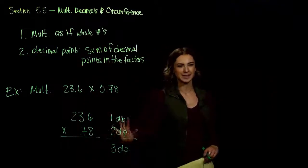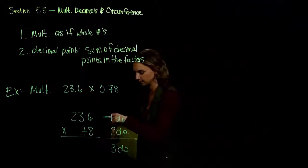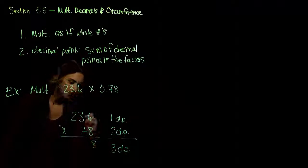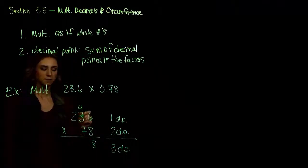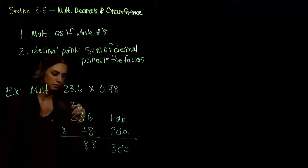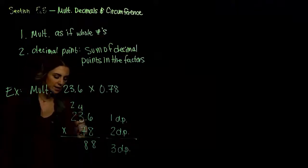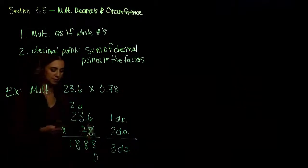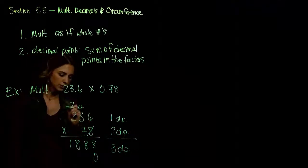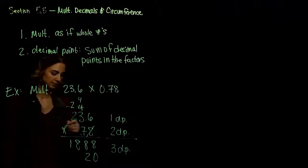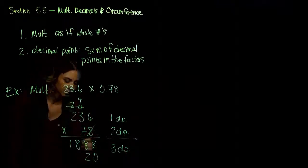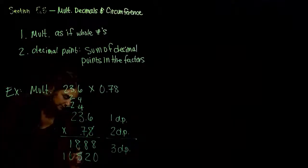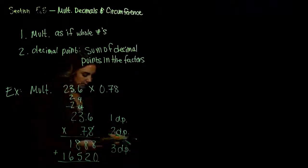Now that we have that piece taken care of, we just multiply like normal. Eight times six is 48. Eight times three, we get 24, plus another four, we got 28. Eight times two, we got 16, 17, 18 in total. So we took care of the eight, moving next door. Now we take the seven. Seven times six gives us 42, so I'll write the four up there. Seven times three is 21, plus another four is 25. And seven times two is 14, plus another two, we get 16. So let's add those together and combine down.